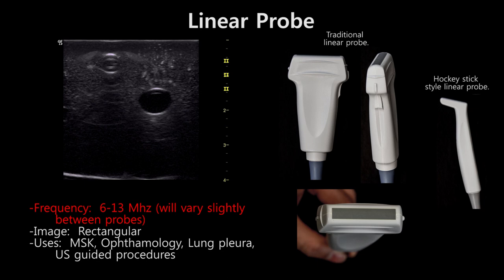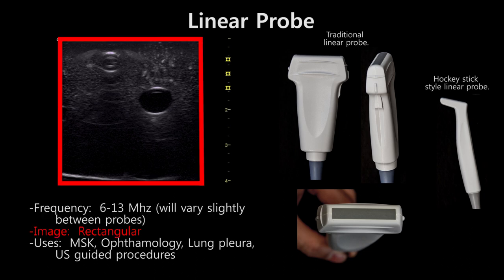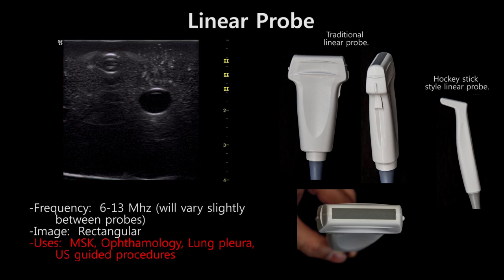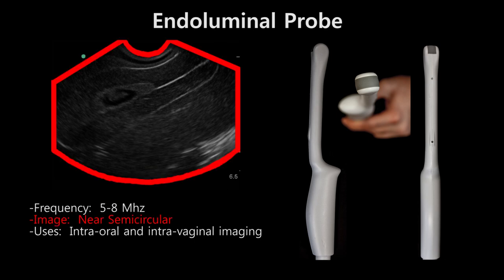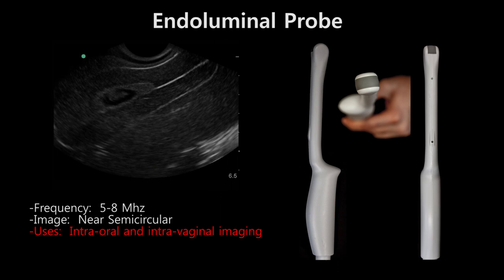The linear probe transmits between 6 and 13 megahertz frequency. It is characterized by high resolution and low penetrance. It gives a rectangular image and is typically used for musculoskeletal imaging, eye-orbit imaging, lung pleura imaging, and ultrasound-guided procedures. The endoluminal probe transmits at 5 to 8 megahertz frequency, with moderate resolution and moderate penetrance. It gives a semicircular image and is typically used for intraoral imaging and transvaginal imaging.